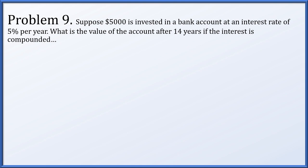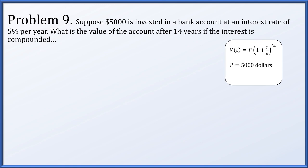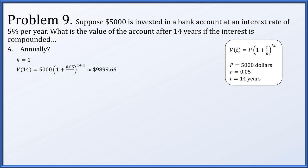Problem 9. Suppose $5,000 is invested at an interest rate of 5% per year. We'll find the account value after 14 years under various compounding scenarios. Using V(t) equals p times (1 plus r over k) to the kt, with p equal to $5,000, r equal to 0.05, and t equal to 14. If interest is compounded annually, k equals 1, and plugging in gives about $9,899.66.